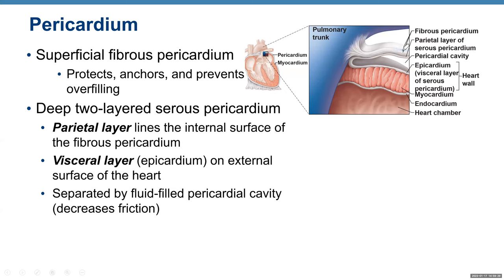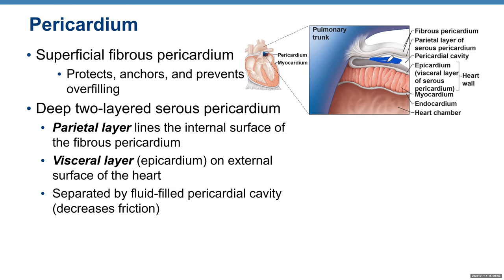Underneath the fibrous pericardium, you'll find the serous pericardium — a membrane made of epithelial and connective tissue that is always double-layered. We have the parietal layer lining the internal surface of the fibrous pericardium, then the pericardial cavity containing serous fluid, and then the visceral pericardium covering the organ itself.